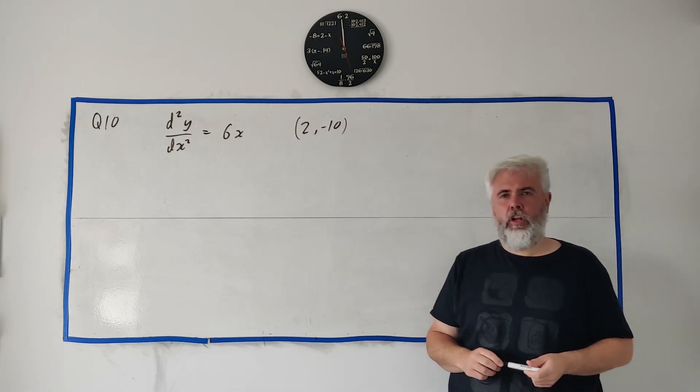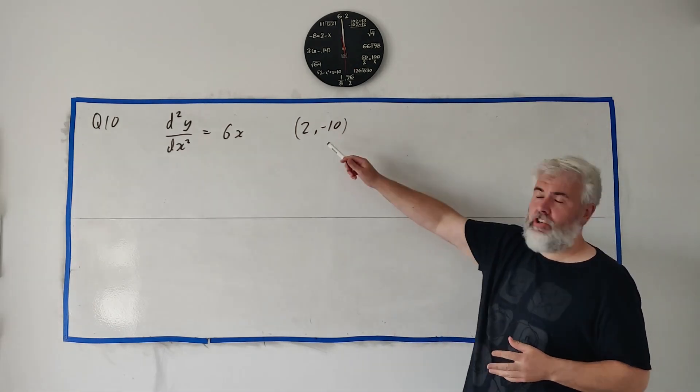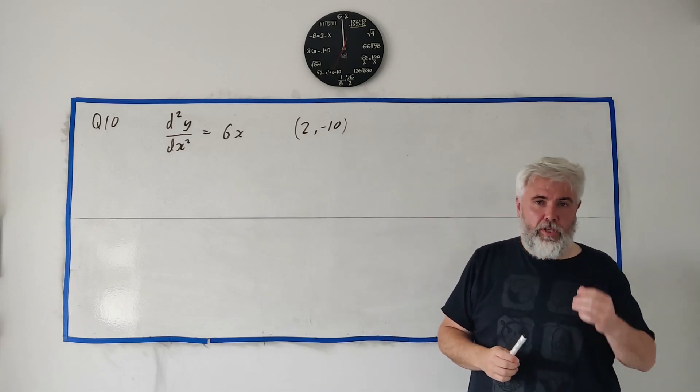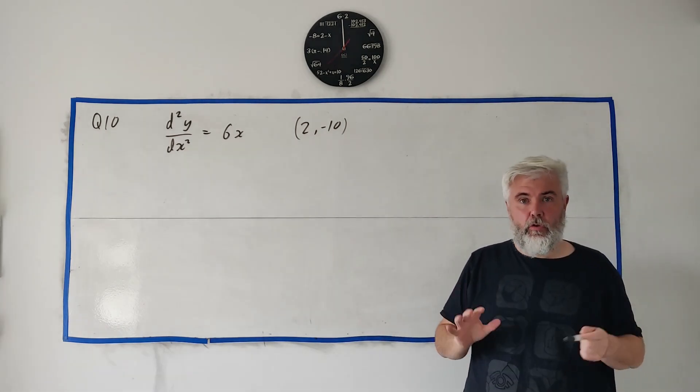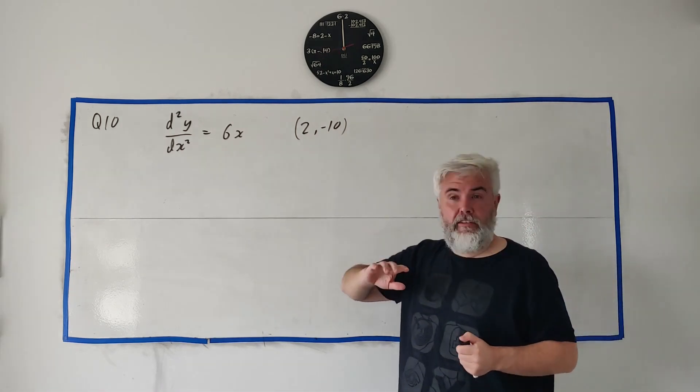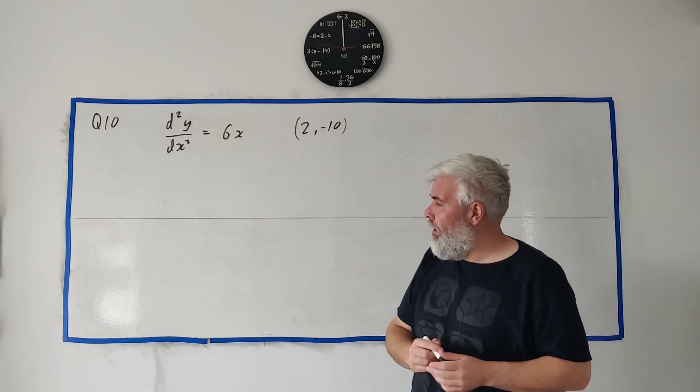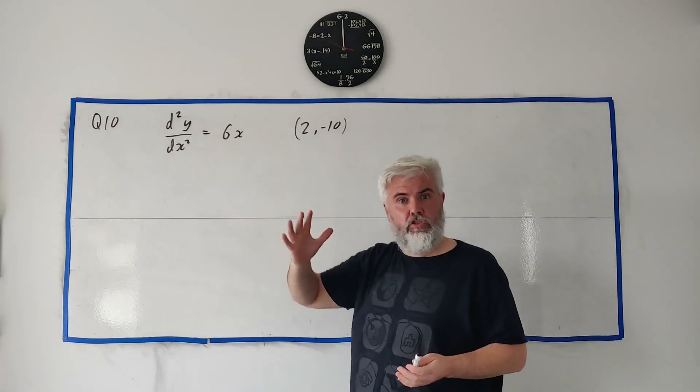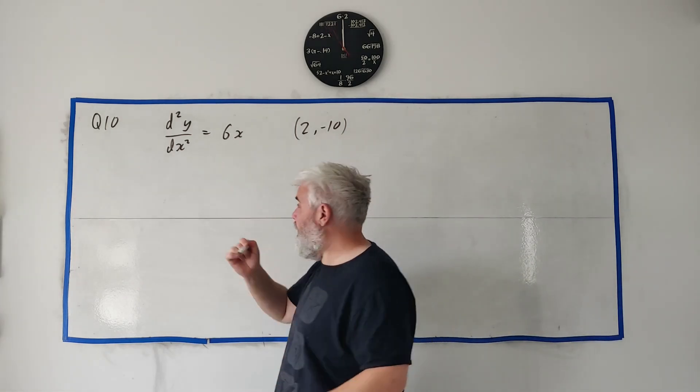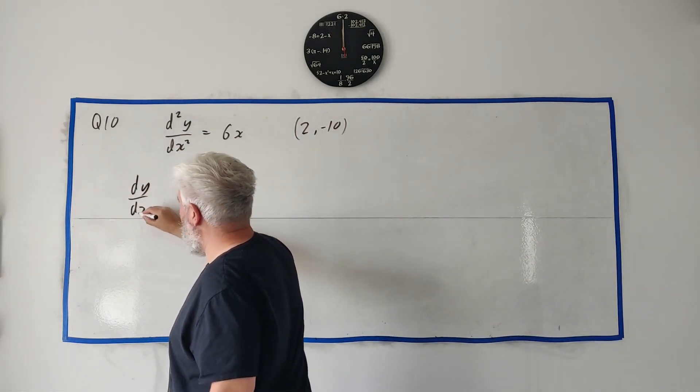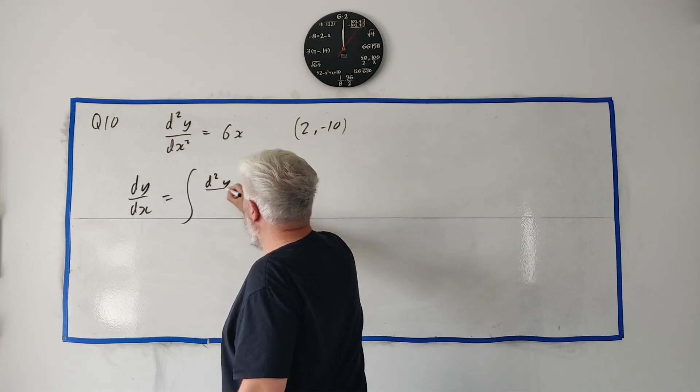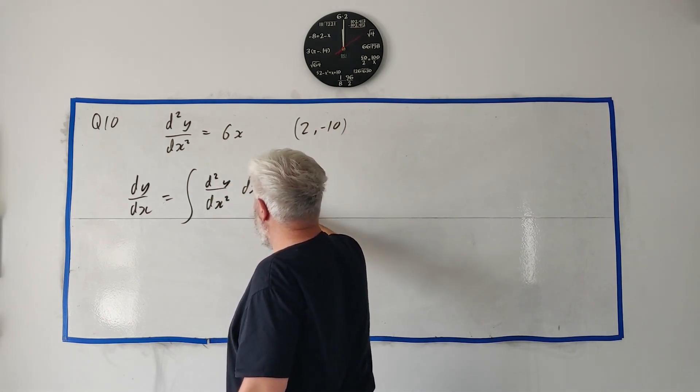Question 10 is all about a curve that they tell us has a stationary point (2, -10) and its second derivative is 6x. So we're going to be using integration and differentiation throughout this question. Four parts it asks us. Part A simply asks us to find the first derivative. So this is the second derivative, find the first derivative. Just remember to go backwards through derivatives and we just use integration. So if we integrate this we should find dy/dx. So let me write that out. dy/dx is equal to the integral of... but that also equals, we'll put 6x in there.